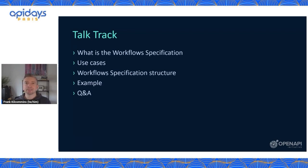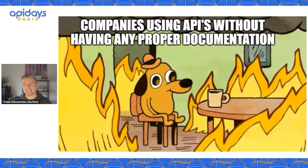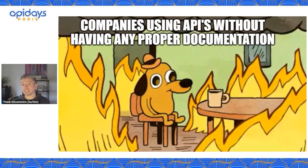Why do we think we need something like this across the API industry? What I still see every day is that companies are using APIs without having any proper documentation. It hinders the ability for your teams to discover the APIs, which hinders adoption — because if you build APIs and other teams can't find them, they're not going to be used. Ultimately that will impact the success of an API and maybe even a whole API program.